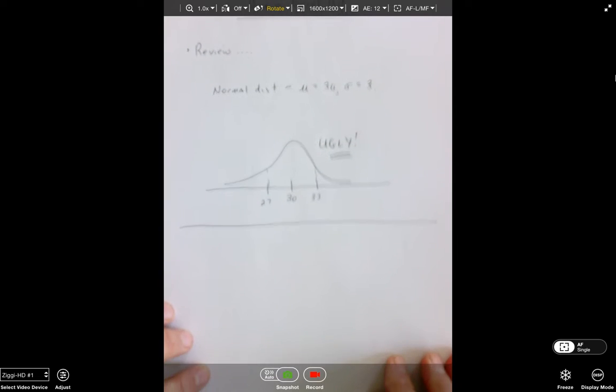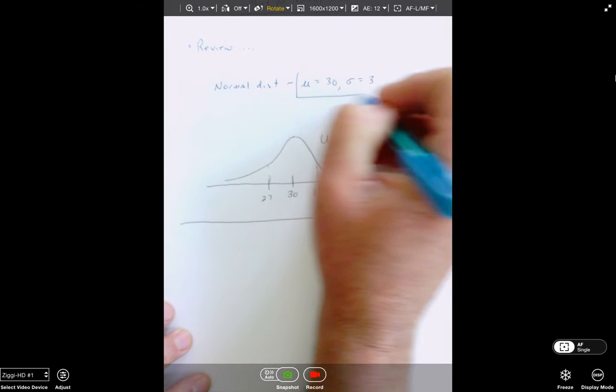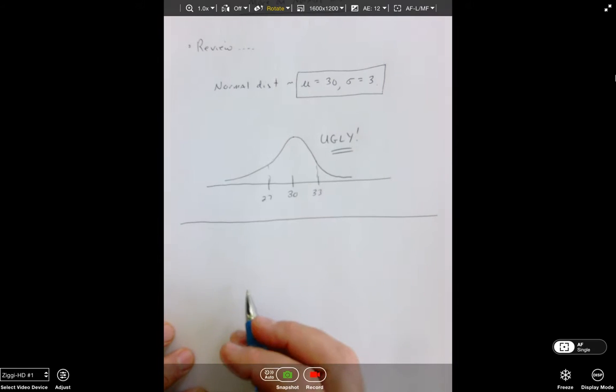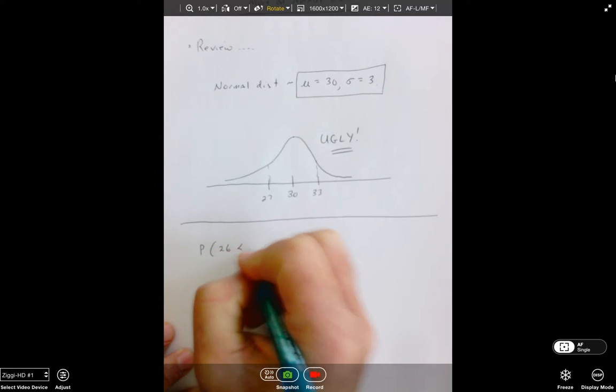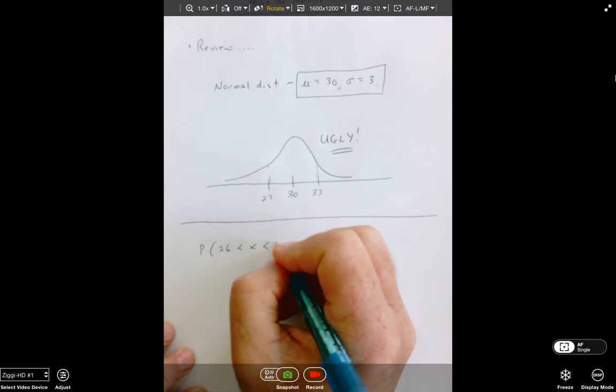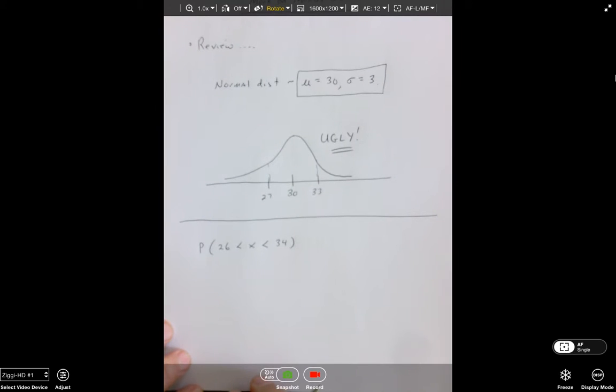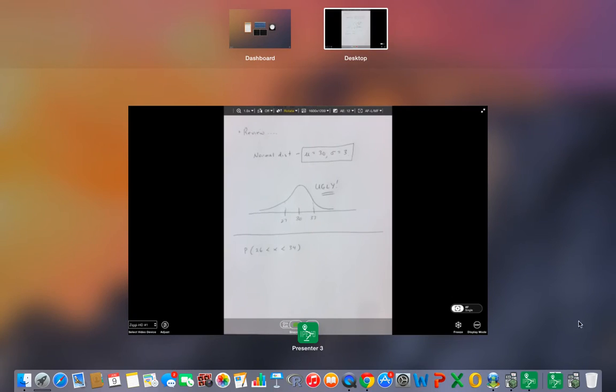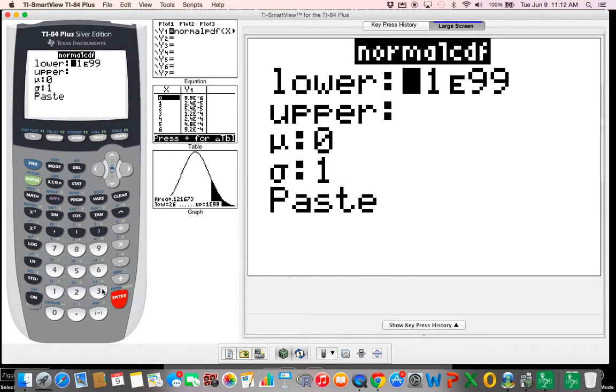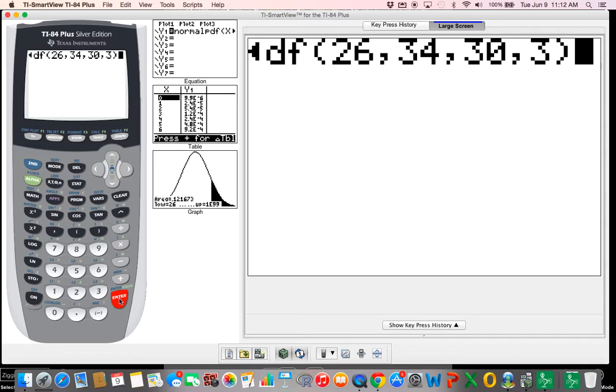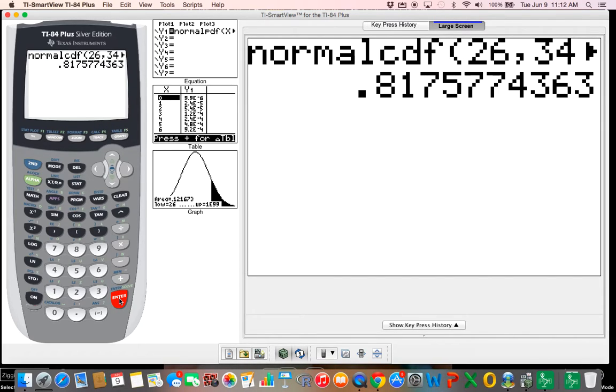So in something like this, if we have, again, just concentrating on this mean of 30 standard deviation 3, if we want to look at the probability that we select some value that's between, say, 26 and 34, for example, we can easily work this type of problem on our calculator using the normal CDF key, just as we've shown before. So we'd run that thing from 26 up to 34, mean of 30, standard deviation 3, paste, hit enter, and we get our answer of 0.8176, rounded to 4 places.